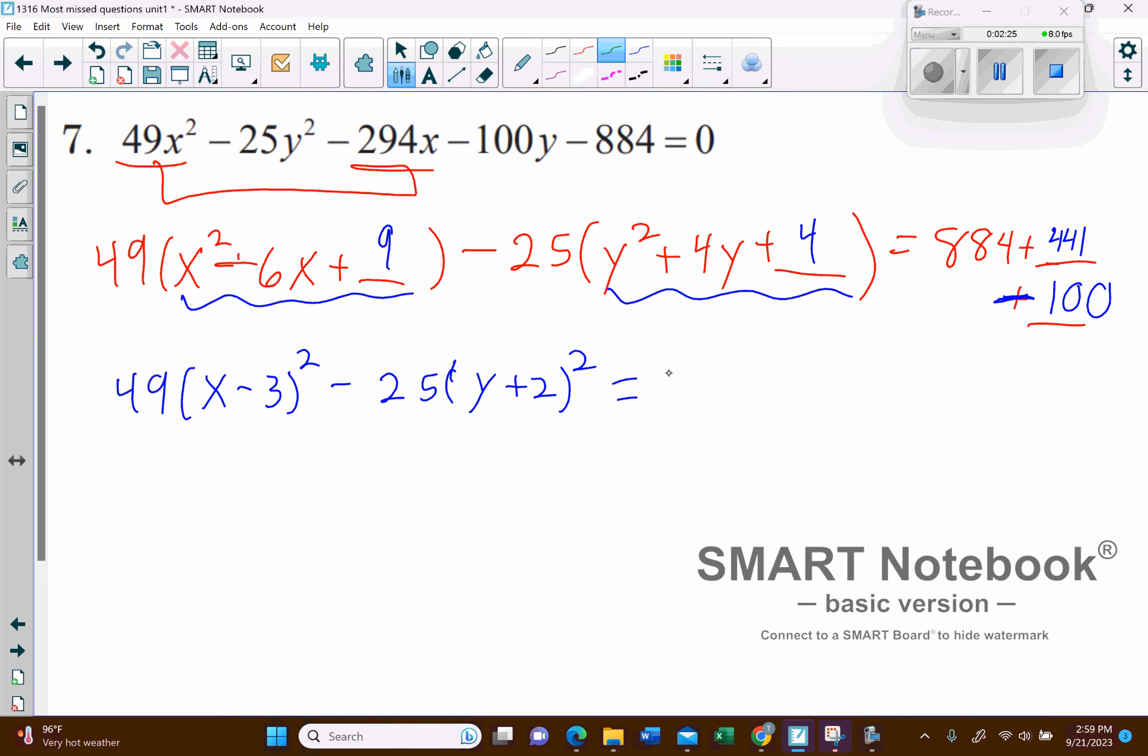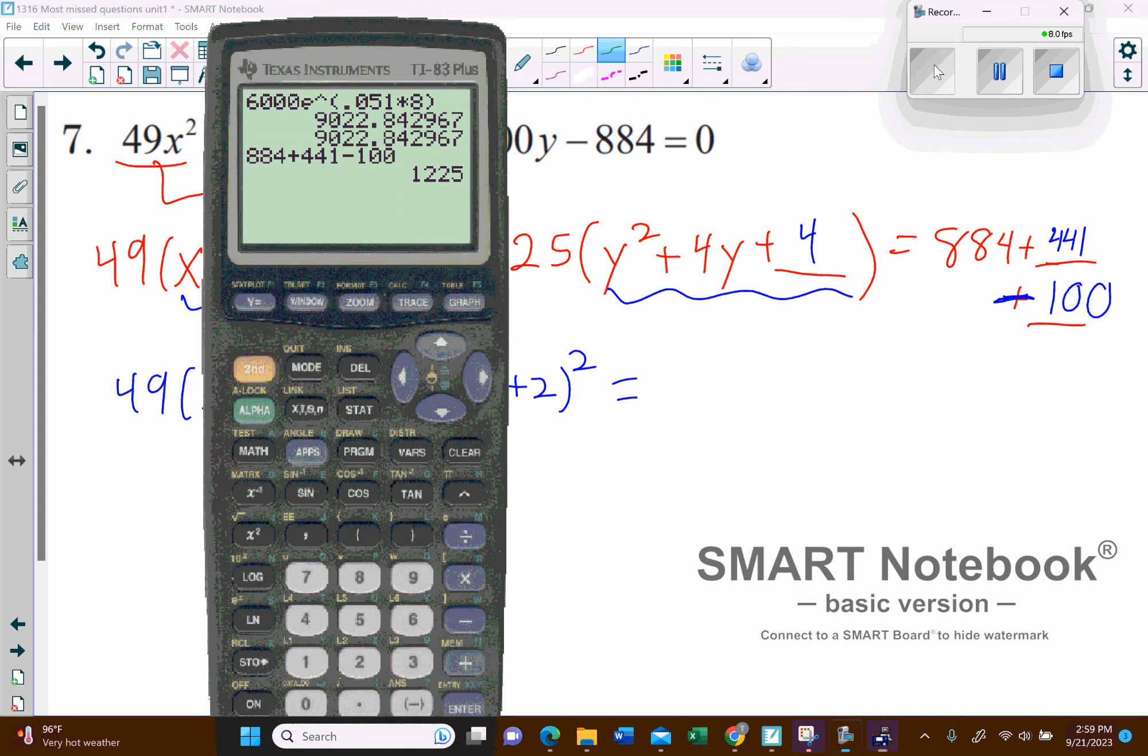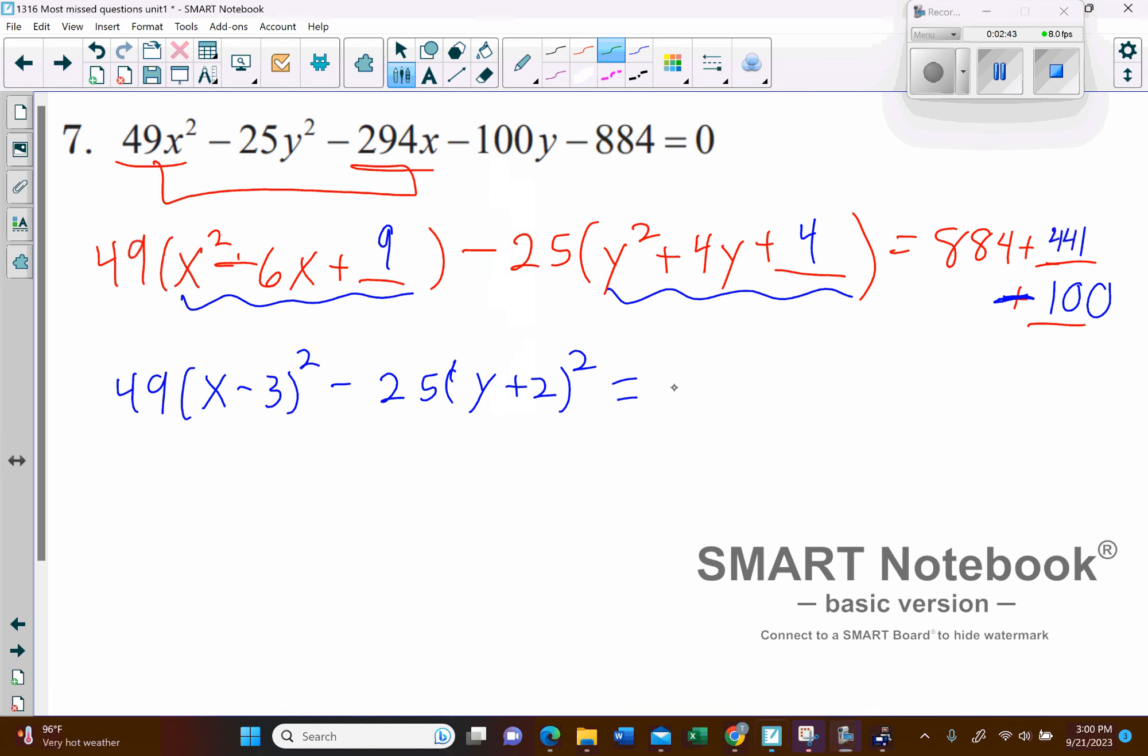And then on the other side, let's see, oh boy, what do we got here? Let's see, I believe it's going to be 12, let me, I'm just going to grab my calculator, I don't want to make a mistake. Okay, so we should end up with 1,225.